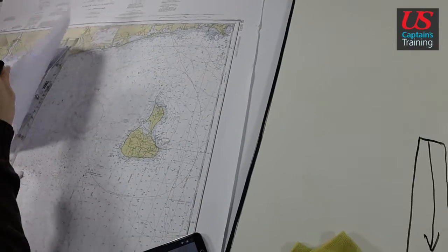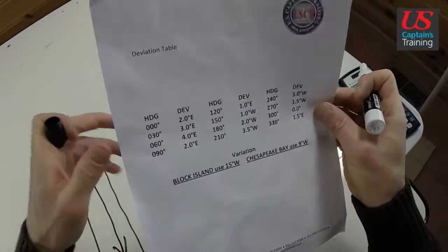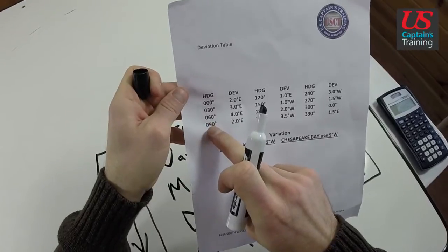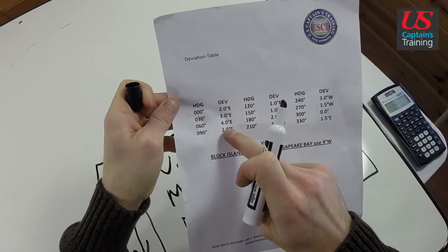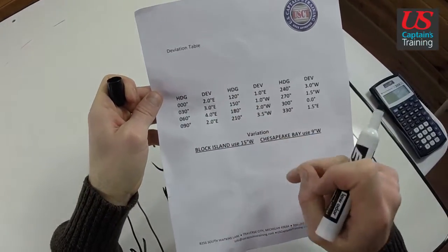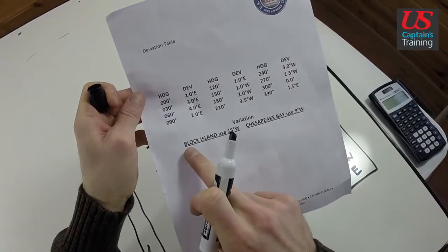Which is where a deviation table comes in. Let me snag that. This is the deviation table we'll be using. It gives your heading in degrees, and then the deviation you'll experience in that heading. See, deviation table. Block Island.